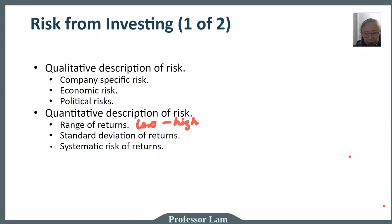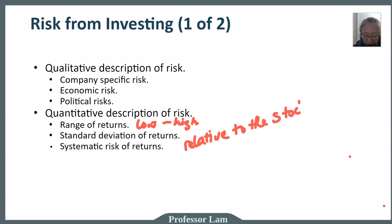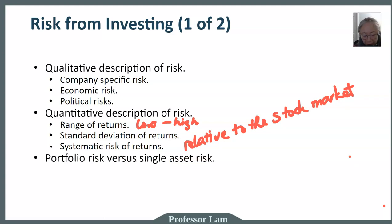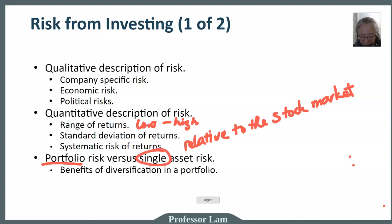You can also use systematic risk — in finance, that's called beta. Systematic risk describes the relative risk compared to the market, which here is the stock market. A stock or mutual fund with high systematic risk has higher risk relative to the overall stock market. We'll also discuss the risk of a portfolio versus a single asset and focus on the benefit of diversification.